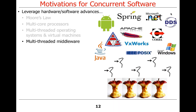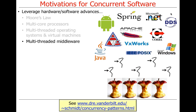On top of the lower-level infrastructure software, we have what we call middleware — basically the stuff in the middle between operating systems and virtual machines, and the actual applications. Examples of middleware include web servers like Apache, various communication middleware like CORBA, DDS, .NET, or Spring, and Android itself. Those things are also multi-thread aware and are typically implemented using a bunch of cool concurrency patterns.